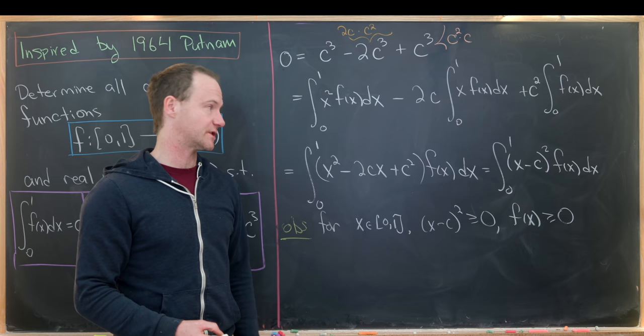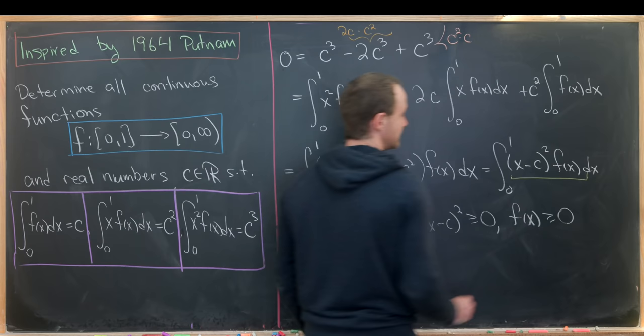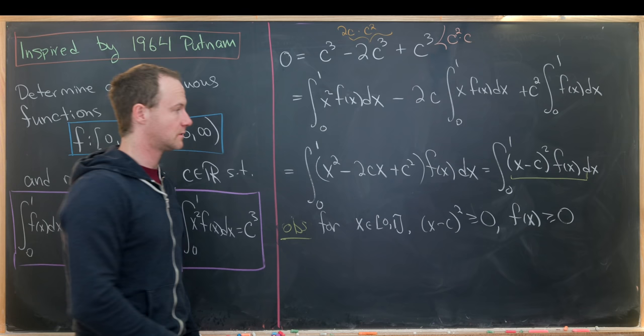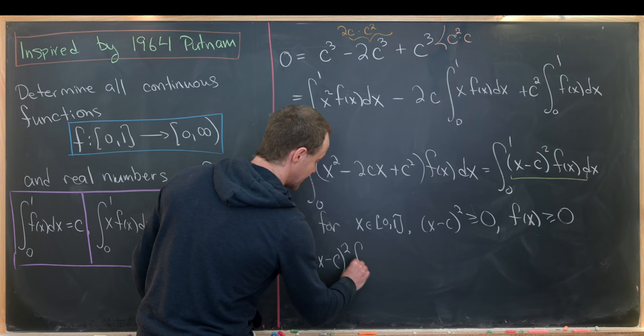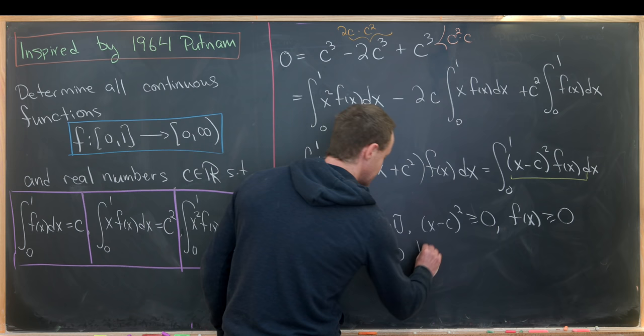But now this means their product is also non-negative. So that means we're integrating a non-negative function, namely their product, and ending up with the number 0. But that tells us that the function that we're integrating must be the 0 function. So we have (x - c)²f(x) equals 0 for all x on the interval [0,1]. That's the only way that we can achieve a value of 0 for this integral.